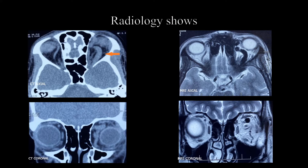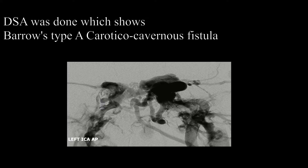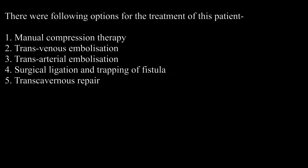The patient underwent radiological evaluation which showed left-sided dilated and tortuous superior ophthalmic vein along with left exophthalmos. Digital subtraction angiography was performed, which confirmed a Barrow's Type A carotico-cavernous fistula.